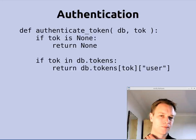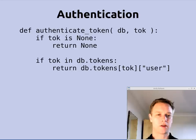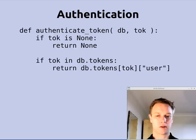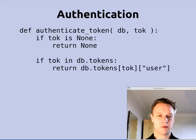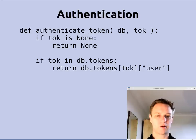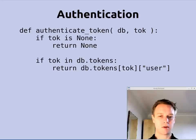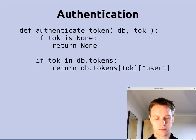Here's authenticate_token. If the token passed in is None — as in there wasn't a cookie set in the request — we just return None, as there's no token and it's not a valid token. Then we look in the database for a key with this token value. As I said, the database is viewed as a map with the tokens as keys — we look it up in the map. If it's there we return the username that we stored. If it's not there we return None, meaning that token doesn't identify a user.